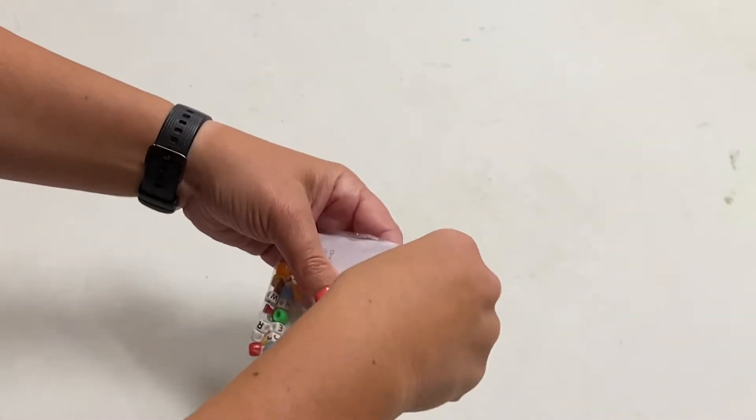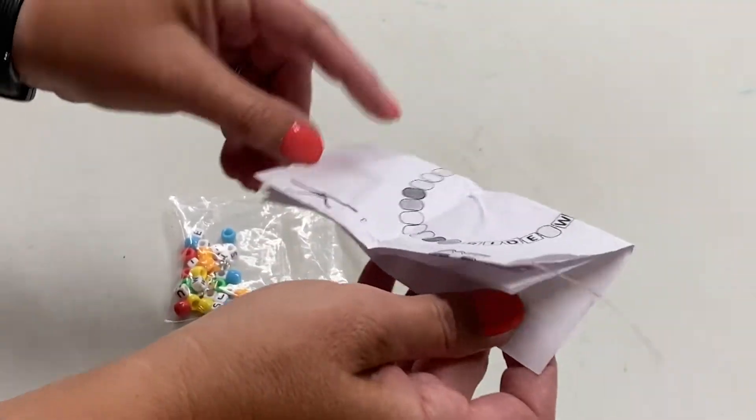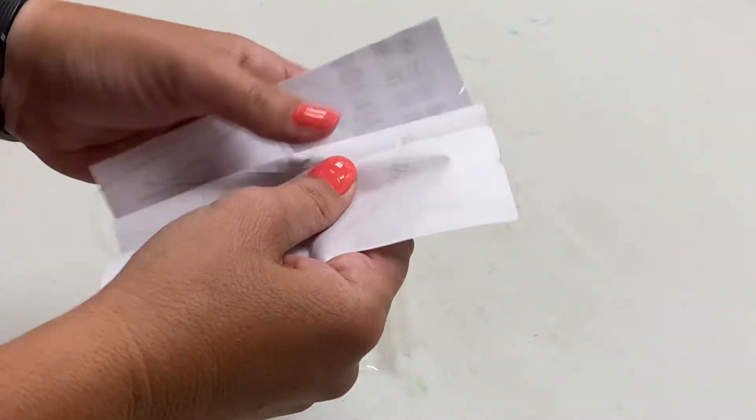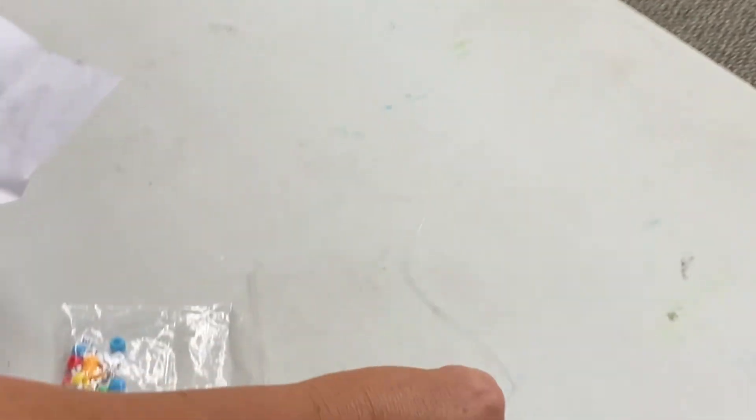Okay, so we're going to open this up. It does give you instructions. Be careful when you open it because there is string in here and you don't want to lose your string—that's what's going to make your bracelet. So there's your string, hang on to that.